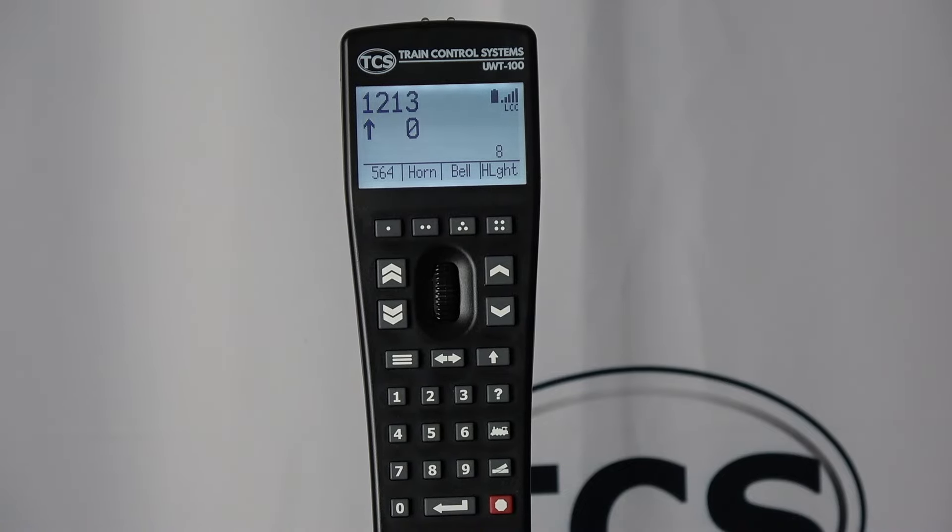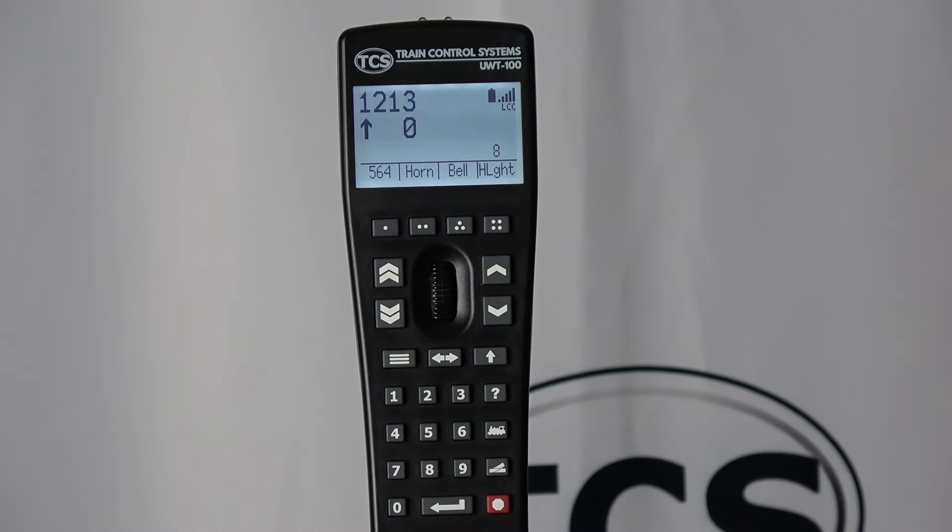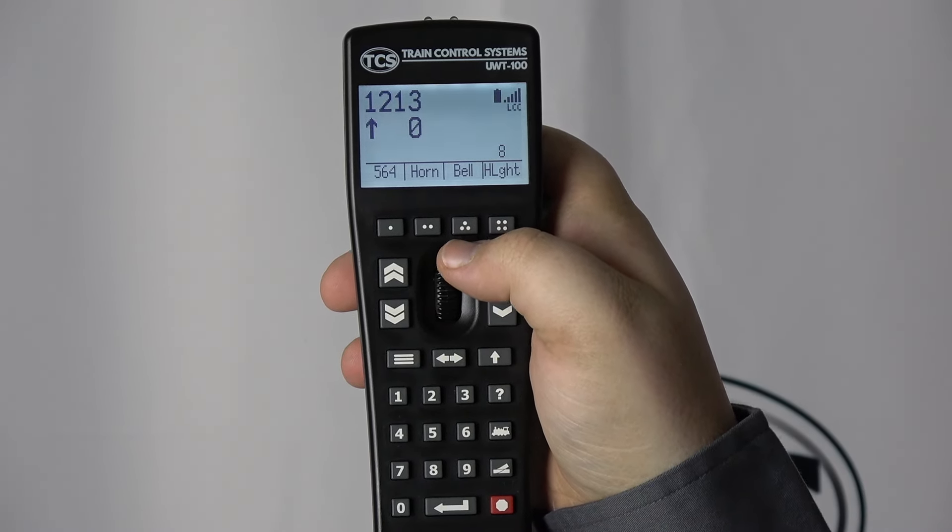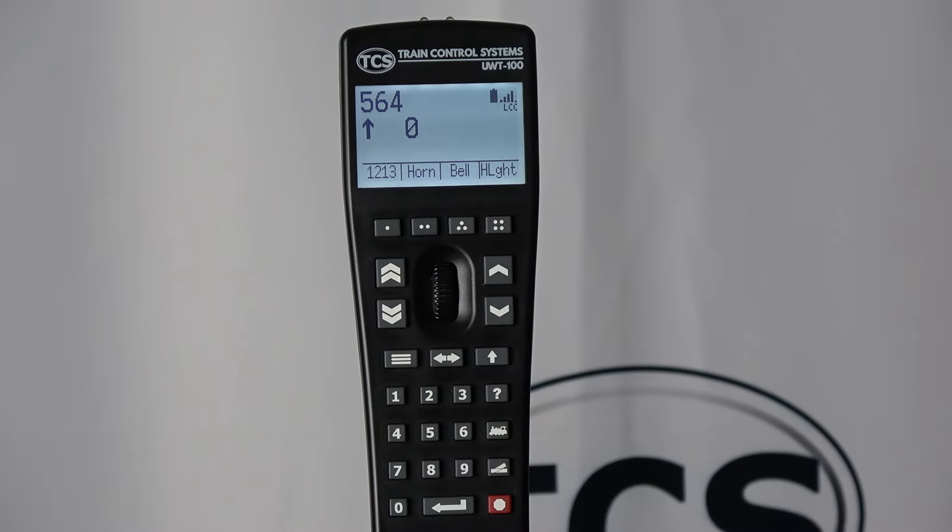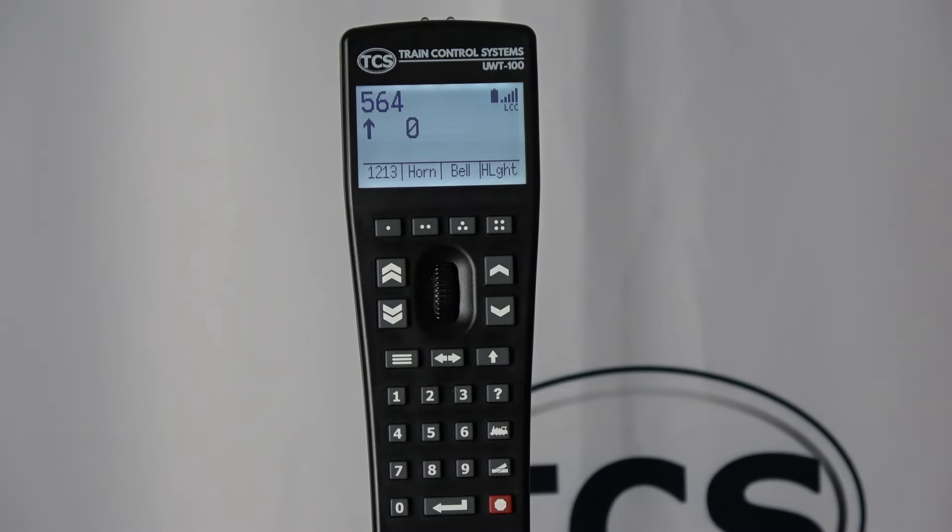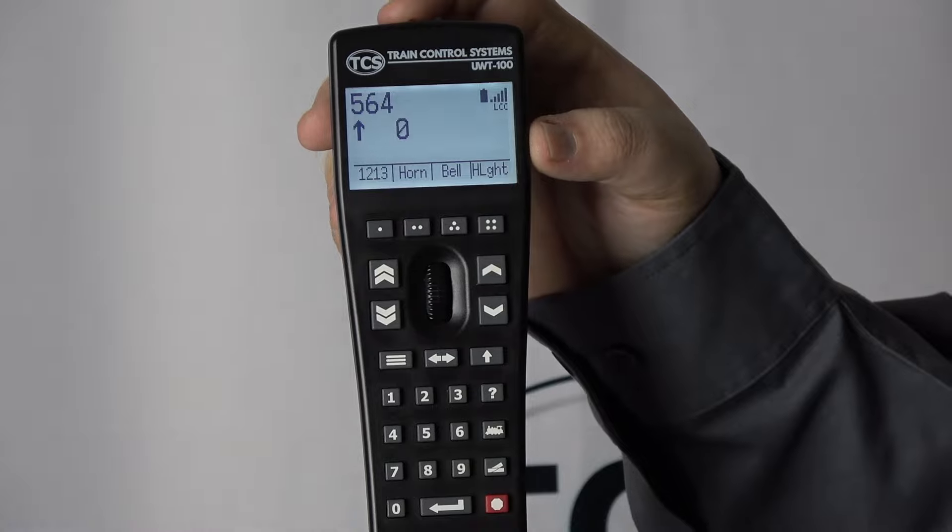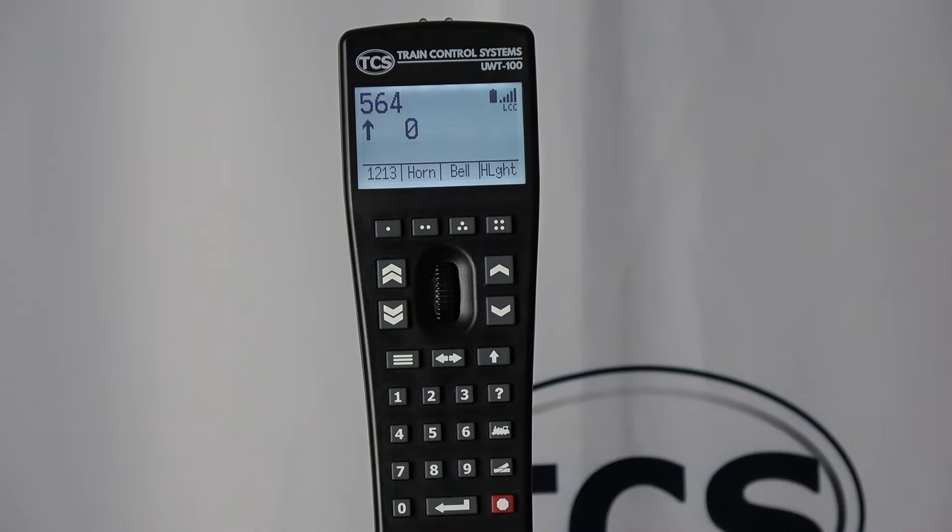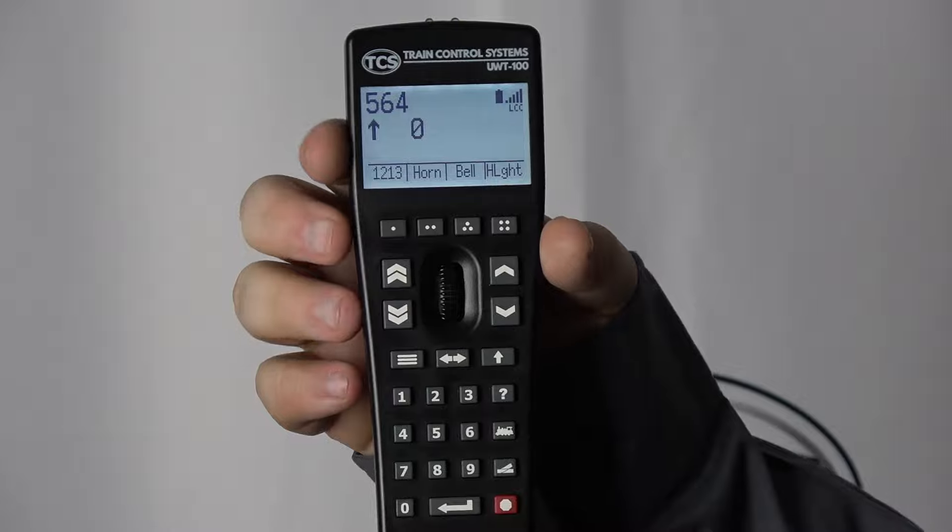After exiting dual throttle mode, you can see that the three dot button changes from the dual direction icon to bell. Additionally, the secondary locomotive slot disappears and swap changes back to recall. The train in the primary slot will remain as your active train when exiting dual throttle mode. The secondary train will be put in the first recall slot.